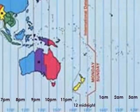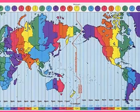If Sydney is 10pm, what time would it be in Perth? Because you are moving to the left, you subtract one hour. Sydney is 10pm and you pass by two time zones. Therefore, Perth would be 8pm.